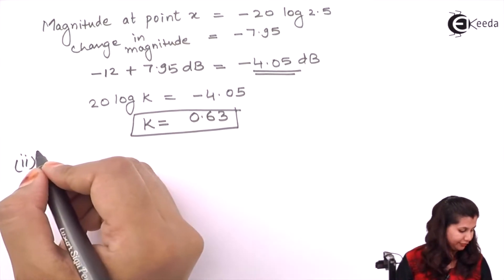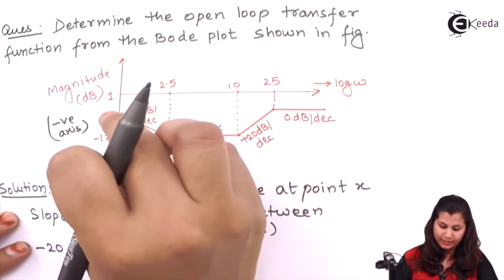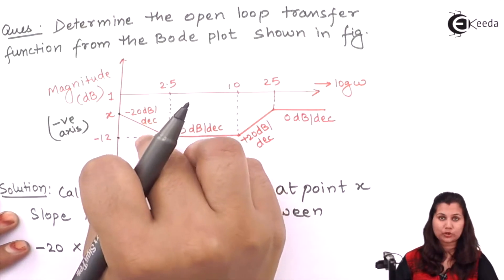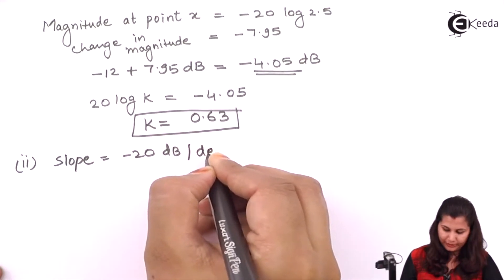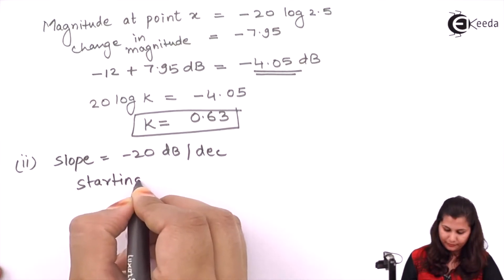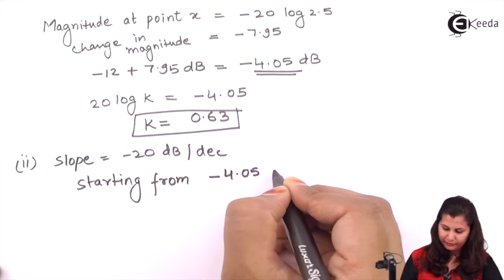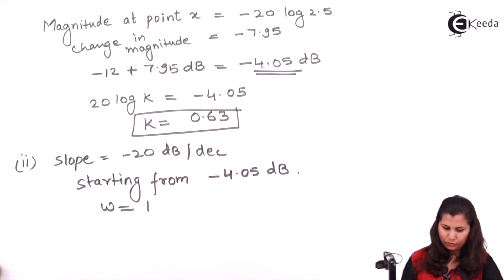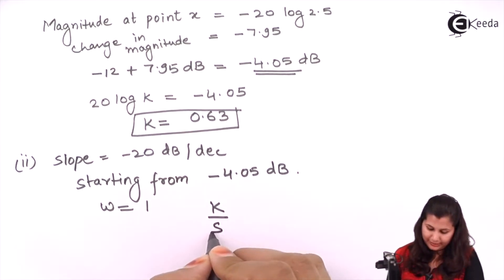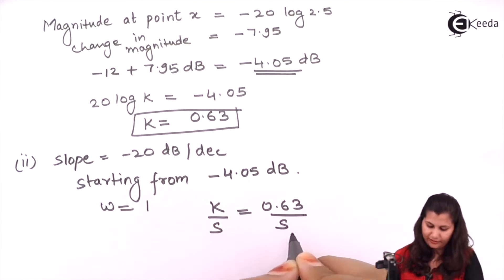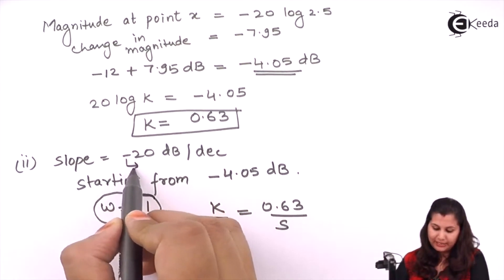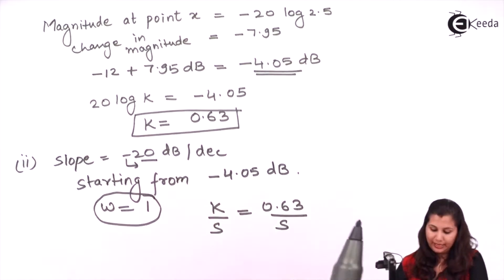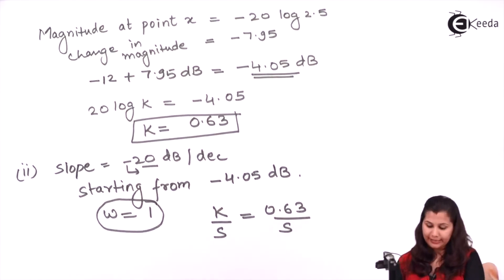The first line starts from ω = 1 with slope minus 20 dB per decade, beginning at minus 4.05 dB. This indicates an integral factor k/s, where k = 0.63. The negative slope means it is in the denominator, and a magnitude of 20 dB per decade means it is a first-order integral factor.